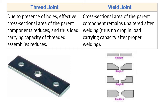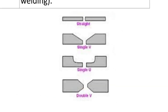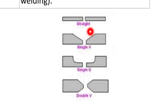For weld joint, the cross-sectional area of the parent component remains unaltered after welding, and thus there is no drop in load carrying capacity after proper welding. Suppose we want to join two plates — we weld them together and there is no reduction of cross-sectional area. Even if edge preparation is done, material is added back, so again there is no reduction of cross-sectional area.